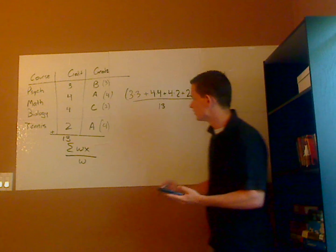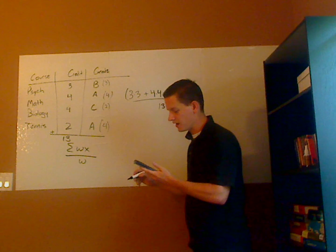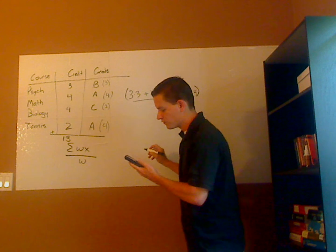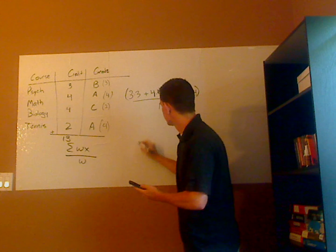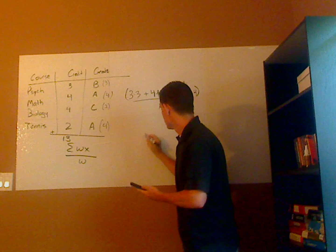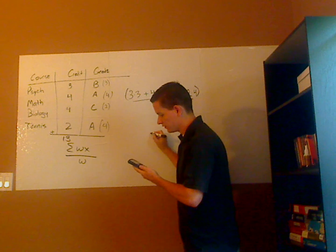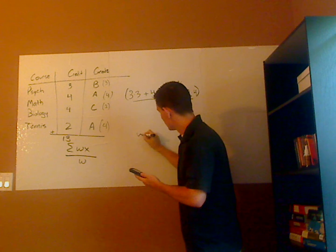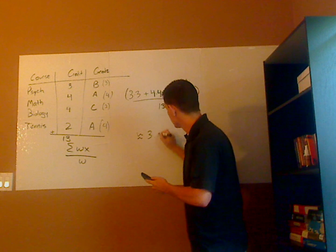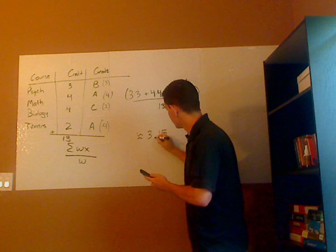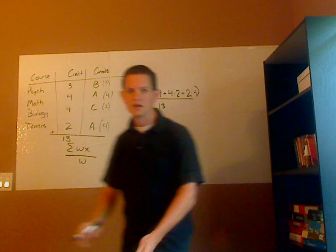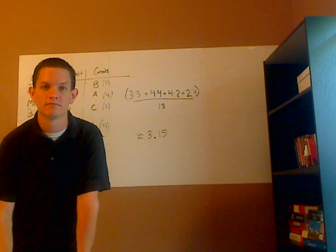And so I get, for this person's GPA — I'm going to round it to two decimal places — it turns out to be approximately 3.15, and that's it.